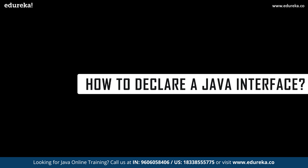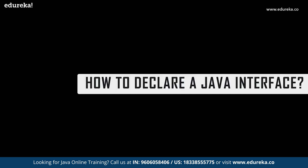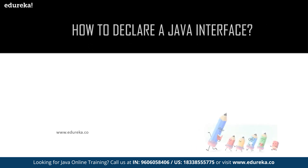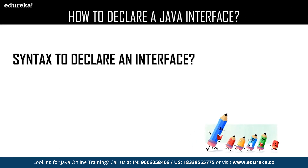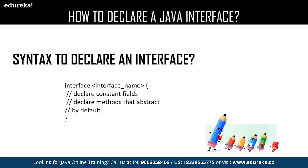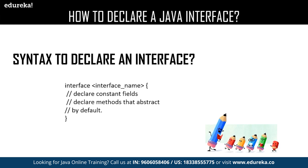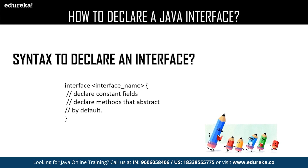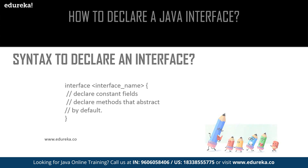Now let us have a quick revision about how to declare an interface. This is the syntax for declaring an interface where you will be using the interface keyword followed by the name of your interface. Inside the interface you can declare your methods. By default, all the methods which you declare in an interface are considered to be public.